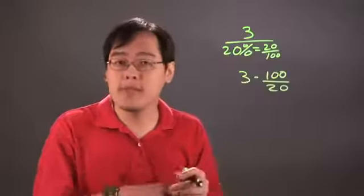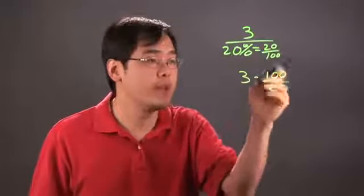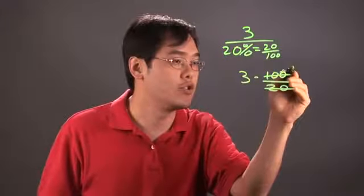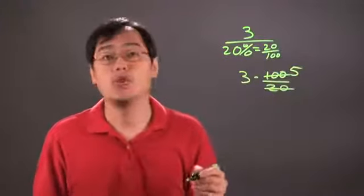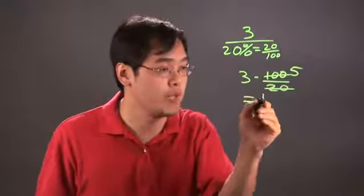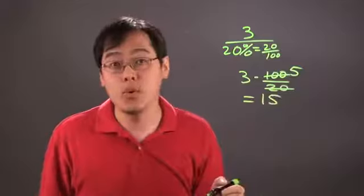Now, from here, to make the multiplication a little bit easier, you may want to reduce. So 100 and the 20 actually reduces to 5. So you're really multiplying 3 times 5 overall. So 3 times 5 is going to give you 15. It really is that straightforward.